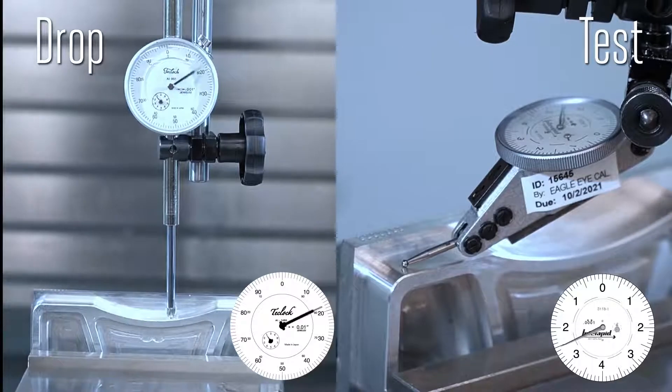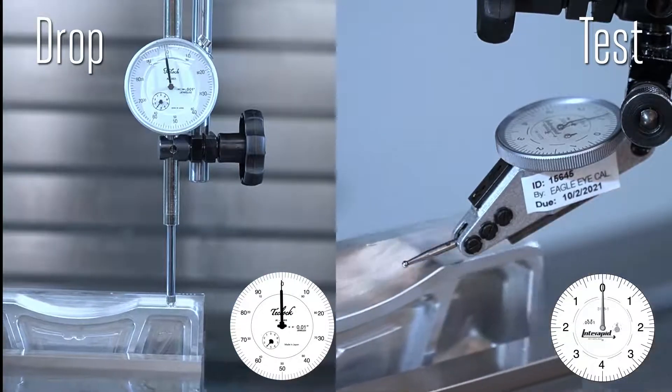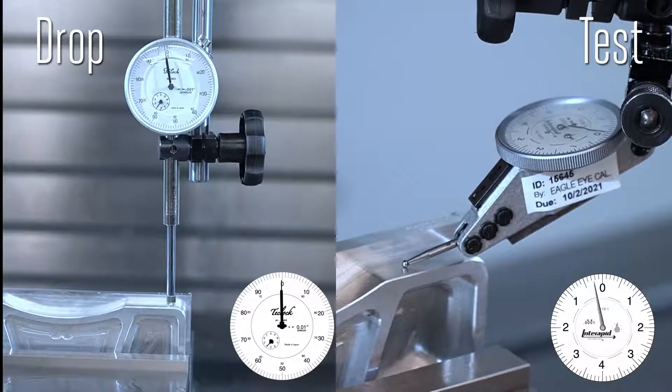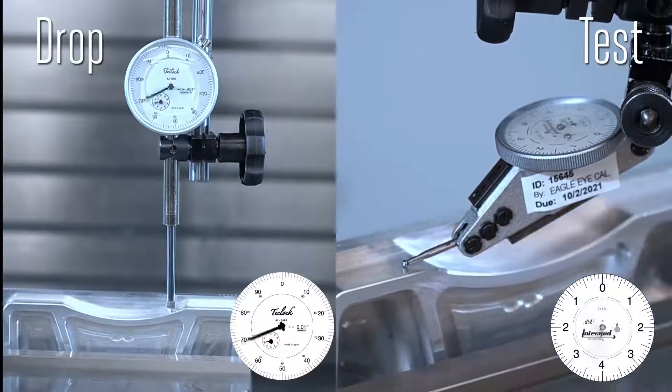The distance being measured here is pretty large. You can see the number of revolutions the needle makes on the drop indicator. The stylus on the test indicator can't even reach most of the distance.